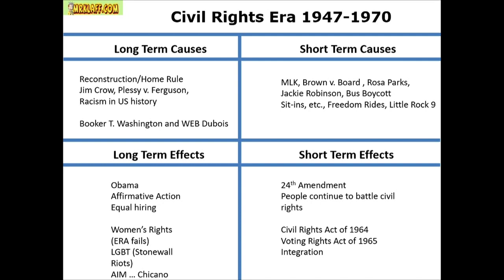Moving on to the civil rights era, 1947 to 1970. Long-term causes: you can see this brewing for a long time — Booker T. Washington, W.E.B. Du Bois, racism, Jim Crow — all continuing through the decades. However, it's not until the short-term causes: Martin Luther King, Brown vs. Board of Education, Rosa Parks, Little Rock 9, sit-ins — all those things are considered short-term.